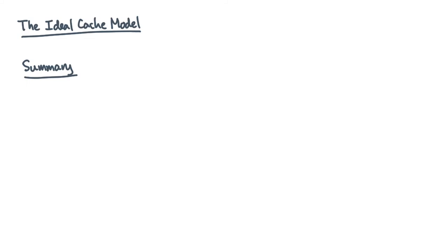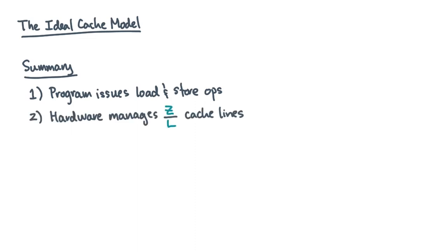Okay, let's do a quick summary of all the assumptions of the ideal cache model. We'll model the program as issuing a sequence of load and store operations to slow memory. The hardware manages the Z words of cache, which is divided into lines of size L words each. These Z over L cache lines we'll sometimes call cache blocks.